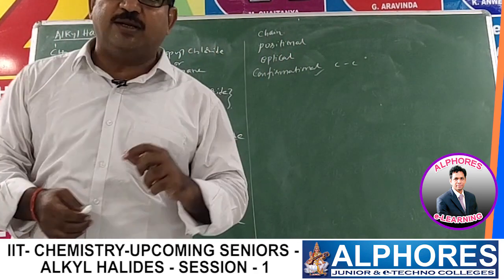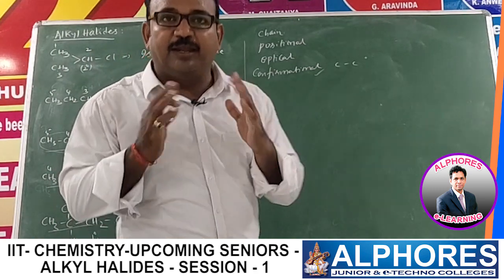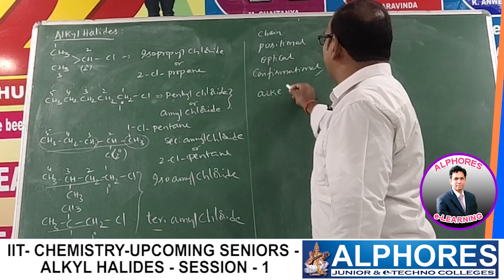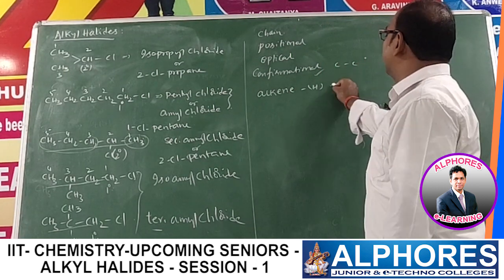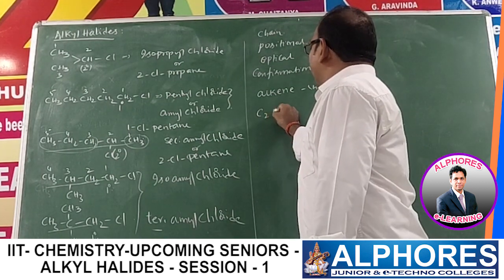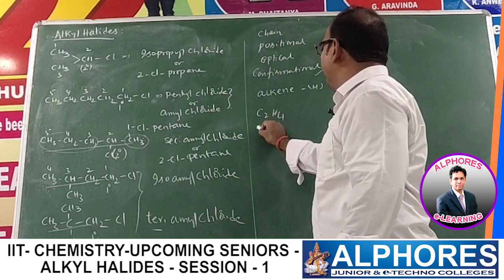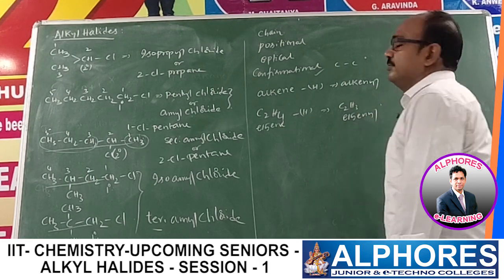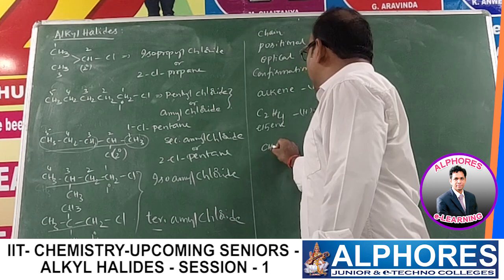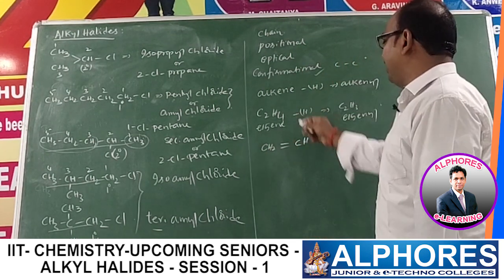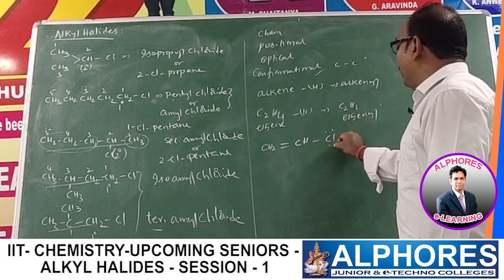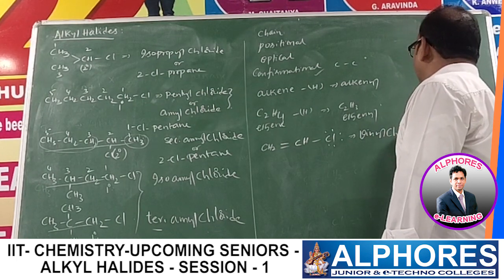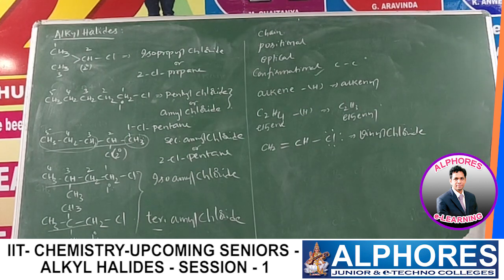Similar to alkyl halides from alkanes, from alkenes we can remove one hydrogen and place a halogen to get alkenyl halides. From ethene (C2H4), removing one hydrogen gives the vinyl group (C2H3). Adding chlorine gives vinyl chloride (CH2=CHCl), also called ethenoyl chloride. From an alkyne, CH≡CCl is named chloroacetylene.